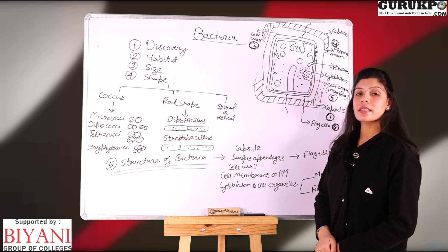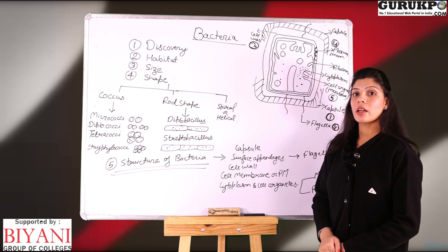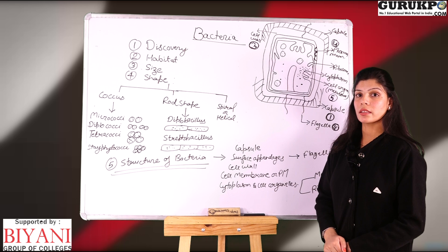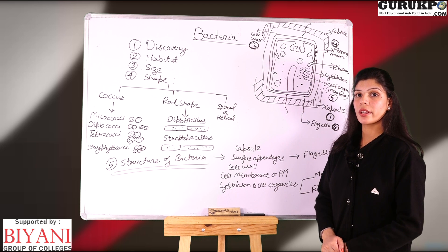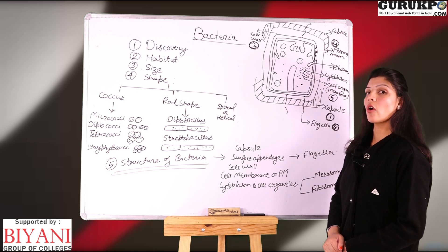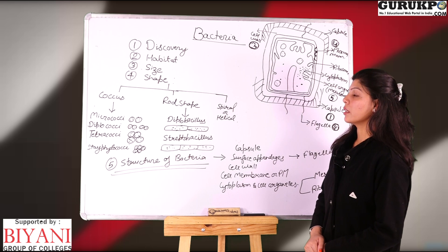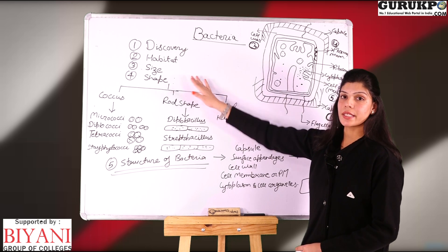Second category is the habitat. Bacterias are found everywhere on the earth. They are found on land, in water, air, and soil, but they are not present in rainwater.